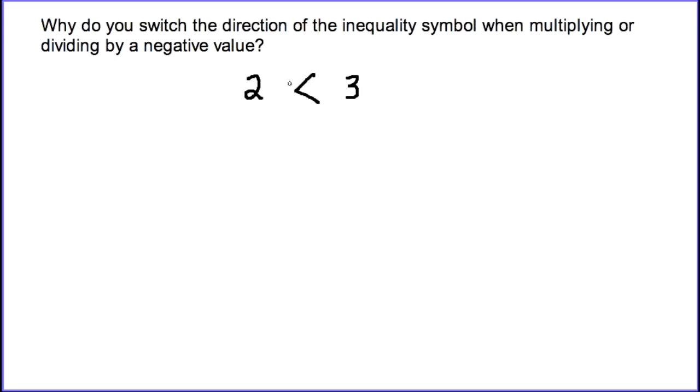The property of equality tells us if we do the same thing to both sides of an equation, or in this case an inequality, we still keep things equal. So we're going to add 2 to the left and add 2 to the right, and we get some new values: 4 and 5.